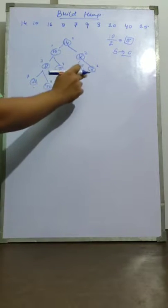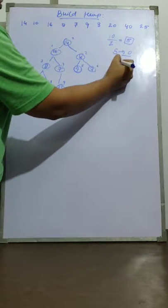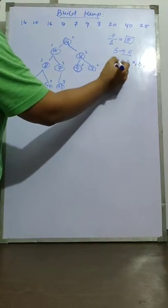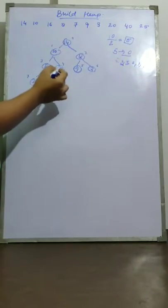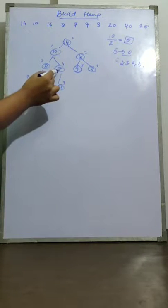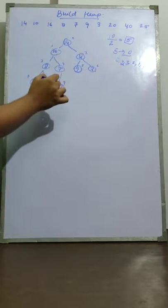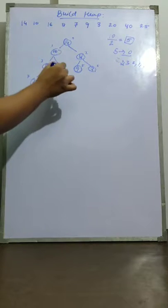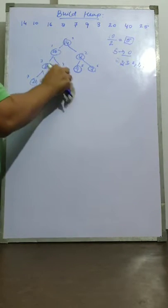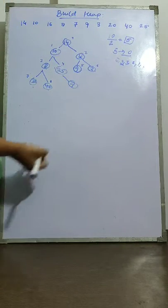Now I move to index 4. I check: does 7 satisfy the max heap property? No, because 25, which is a child of 7, is greater than 7. So I swap these two numbers — this becomes 25 and 7. Now this subtree is a max heap.